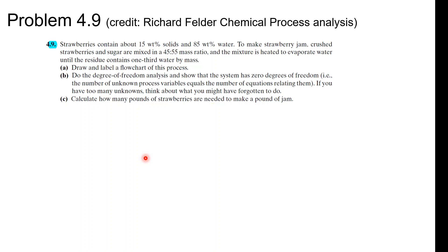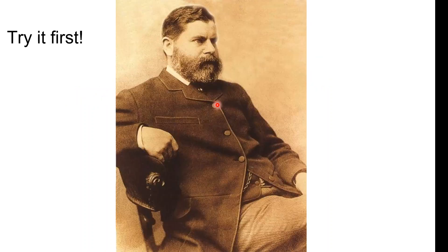We're going to try to do like 50 problems. This is number nine from process analysis. We've got strawberries, some sugar, and some water, and we're trying to make jam. This is a homework problem, so it's going to be pretty useful. I'm going to do the mass balance — try it yourself first, guys and gals.